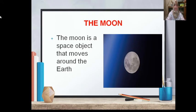The moon. What is the moon? The moon is a space object that moves around the earth. It is a large sphere made of rock materials. It does not have its own light. When it reflects the sun's light, we can see the moon.